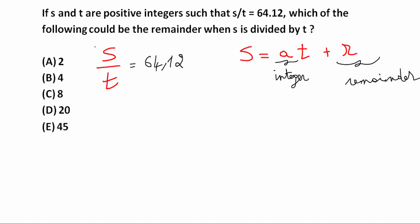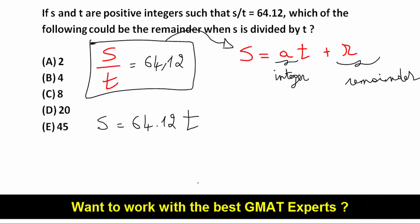So let me try to write this one and transform this one into something similar to this. So if I do some cross multiplication here, I get S is equal to 64.12 T.